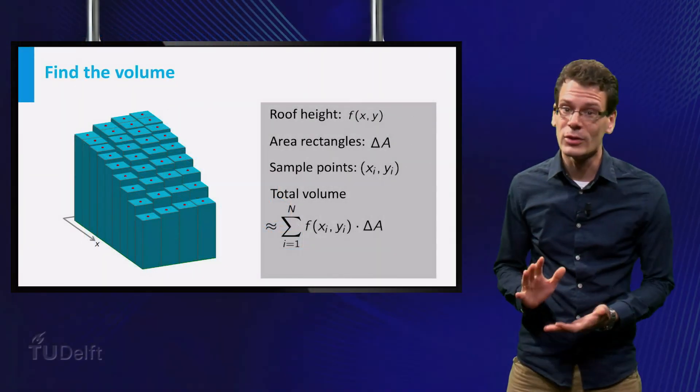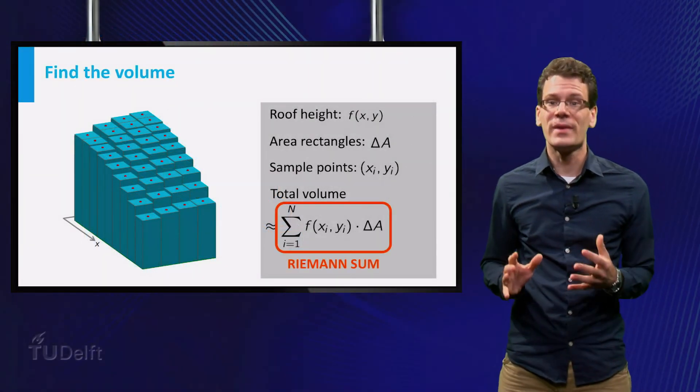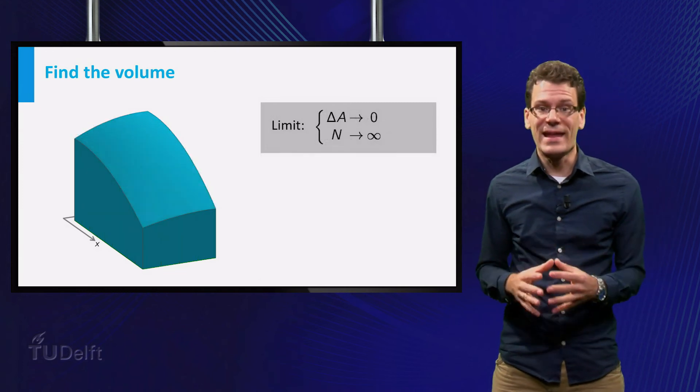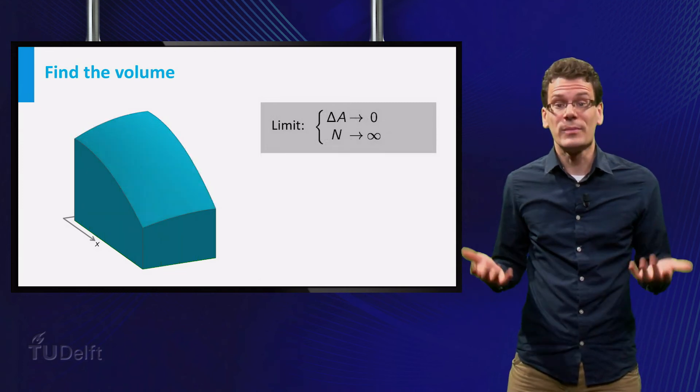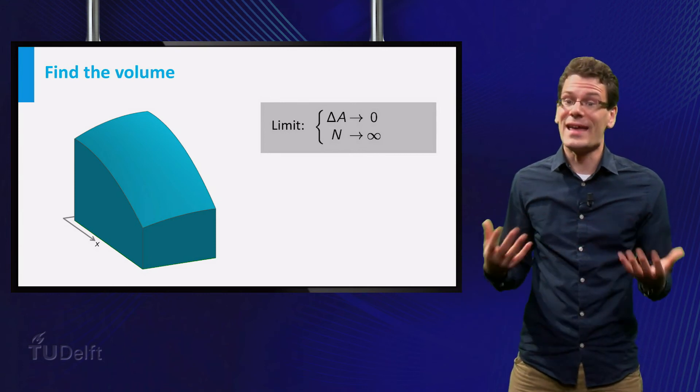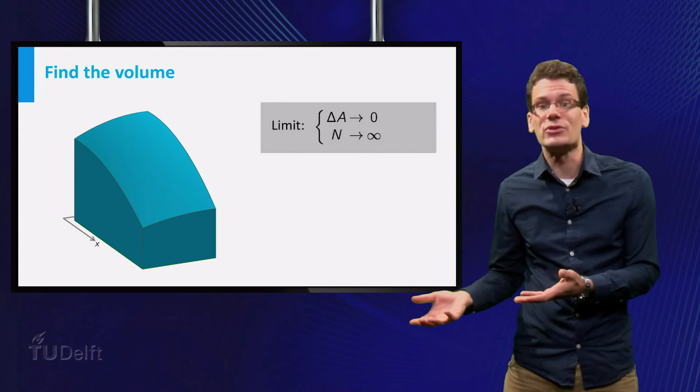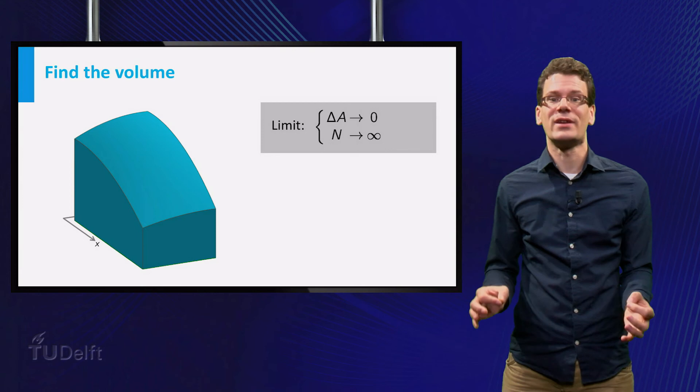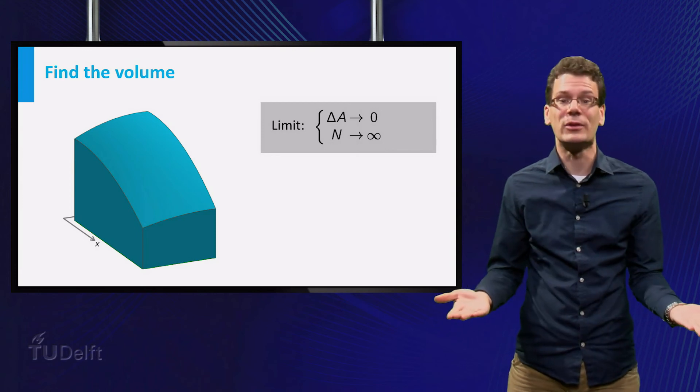Does this expression look familiar? It is a two-dimensional analog of the Riemann sum. When we increase n, the number of rectangles, the Riemann sum gives a better approximation of the volume. The limit of the Riemann sum, as n goes to infinity and delta A goes to zero, is by definition the integral of the height function f over the base of the building.